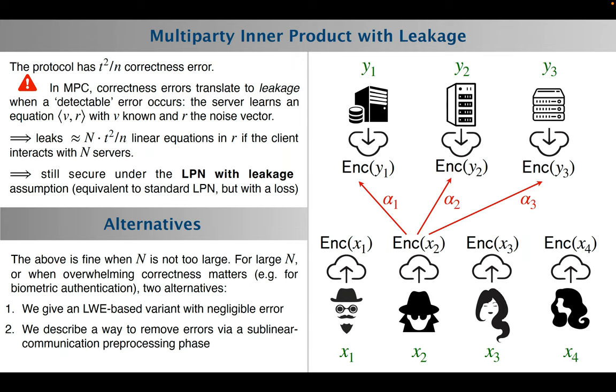The preprocessing uses interaction, but it's input-independent and has communication sublinear in the size of the vector, so it really adds only a minimal overhead. We also describe some new zero-knowledge proofs to enhance the security of our protocols in the malicious setting. The new zero-knowledge proofs might be of independent interest, but for that, you will have to see the talk. I'll be happy to see you online.